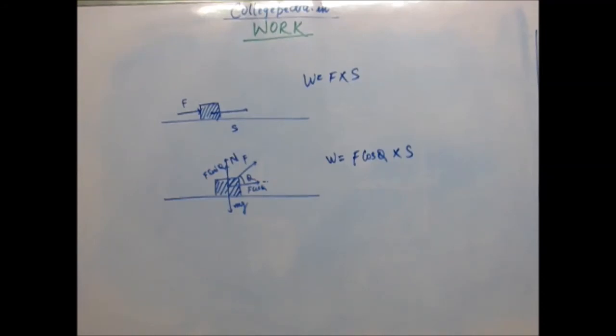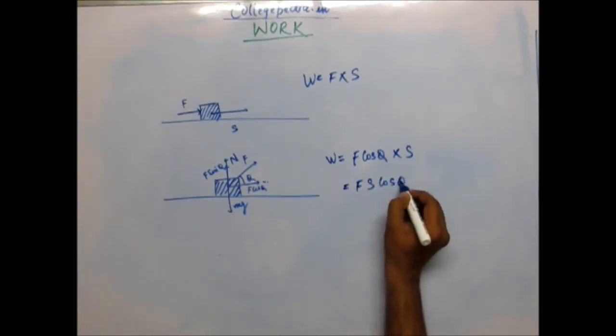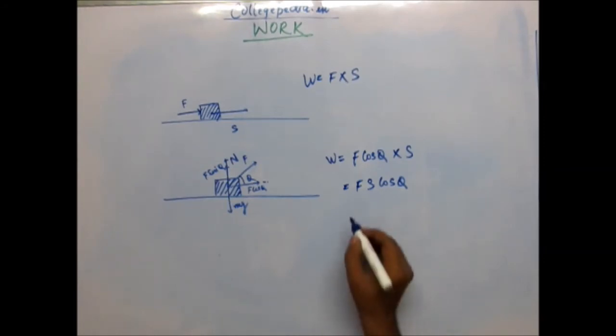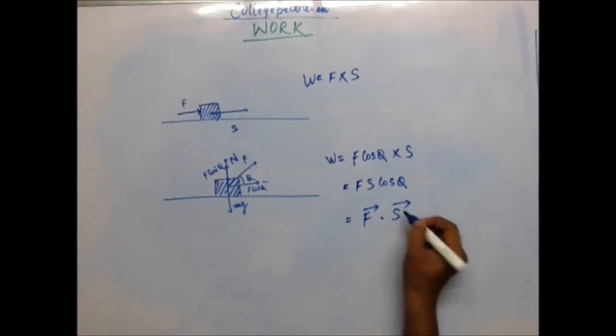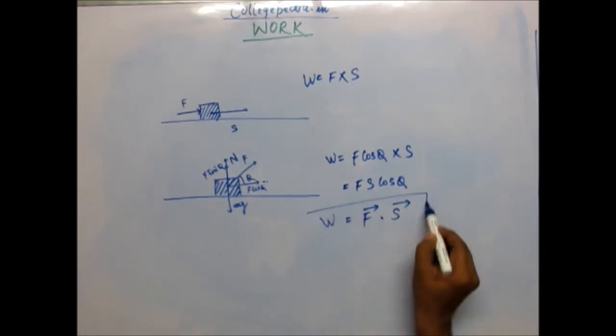Now this force into displacement should be the work. This is how we understand it, and this is the accepted way of writing the expression of work. If we just rearrange it, it could be written as FS cos theta, and we can also write this as F vector dot S vector. This is actually F dot S. F dot S would be FS cos theta. This is the complete definition of work.